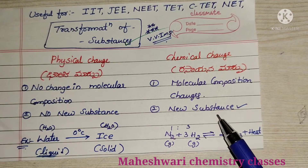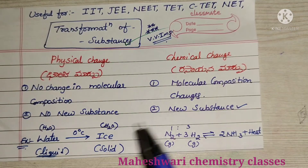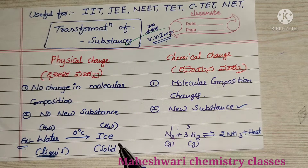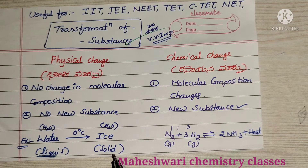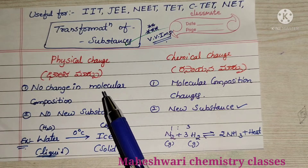For example, water at 0 degrees Celsius converts to ice. Here, the water formula is H2O and ice formula is also H2O. Water is in a liquid condition and ice is in a solid condition, but the formulas are not changed. So this is a physical change.